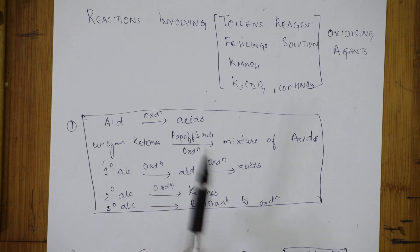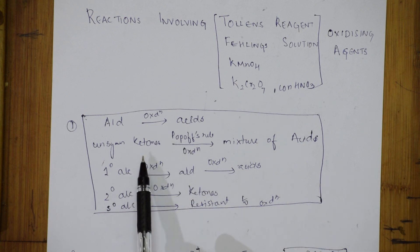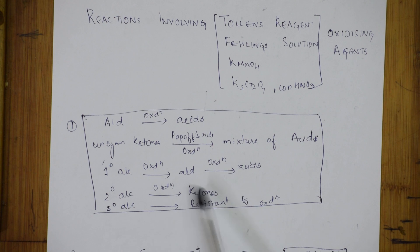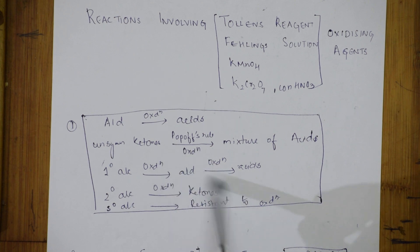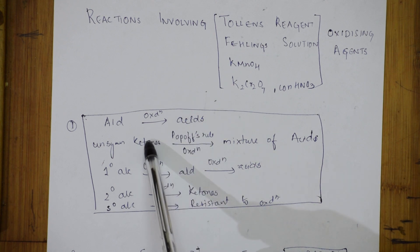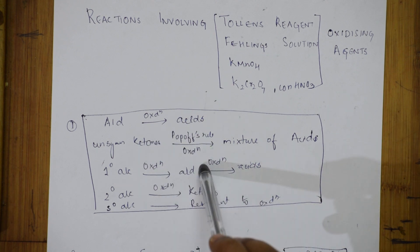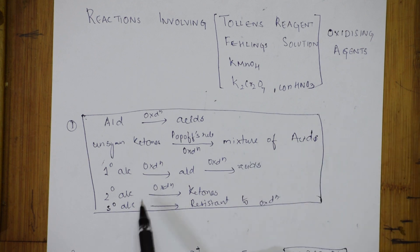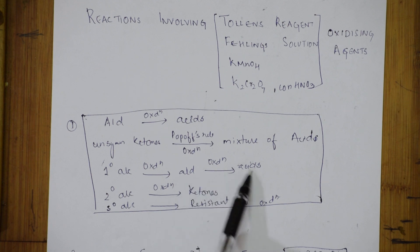Remember: aldehydes on oxidation give acids. Unsymmetrical ketones generally do not undergo further oxidation. However, there is Popoff's rule — in this rule, unsymmetrical ketones will undergo oxidation to give a mixture of acids. Also, primary alcohols on oxidation give aldehydes, and aldehydes on further oxidation give acids.